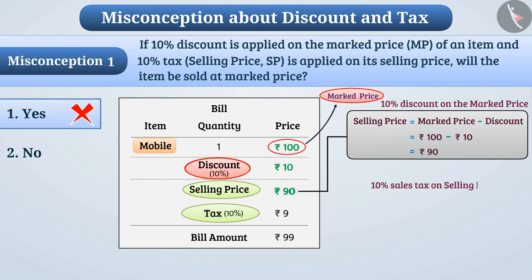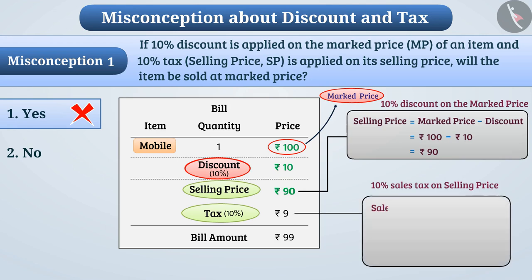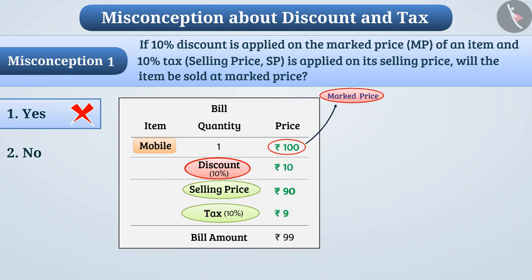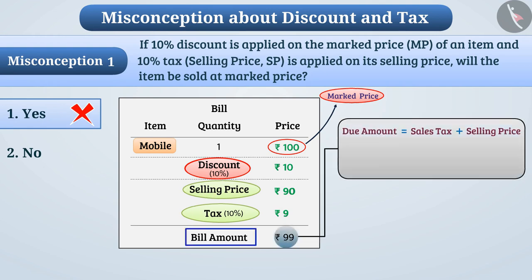Since sales tax of 10% is levied on the selling price, the sales tax equals 10/100 multiplied by Rs. 90, which is equal to Rs. 9. By adding the sales tax to the selling price, the bill amount is obtained: Rs. 90 plus Rs. 9 equals Rs. 99.